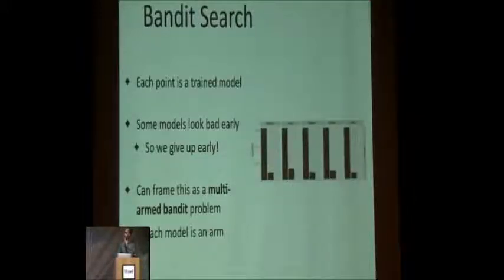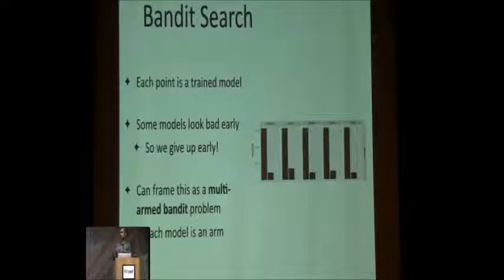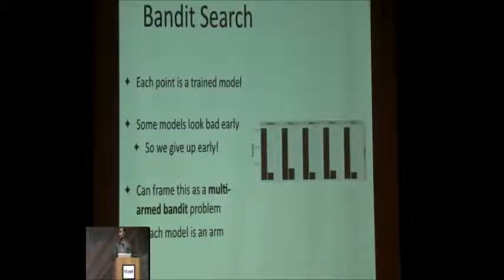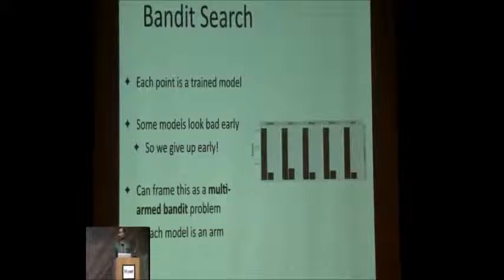Here are results using a naive multi-armed bandit algorithm, comparing results on five datasets. The bars on the left correspond to training each model to completion; the bars on the right show training with early stopping on models that don't look very good. Across these five datasets, we get roughly a 5x speedup, with roughly the same holdout accuracy. So for little to no loss in accuracy, we get the speedup.